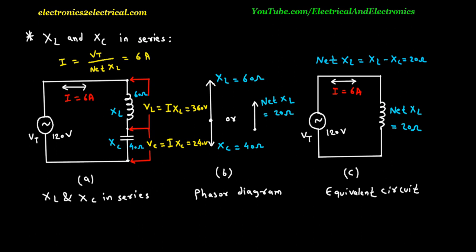Now suppose the values are swapped: XC becomes 60 ohms and XL becomes 40 ohms. In this case the net reactance would be 20 ohms capacitive, and the current remains 6 amperes. This time the current leads the voltage by 90 degrees.